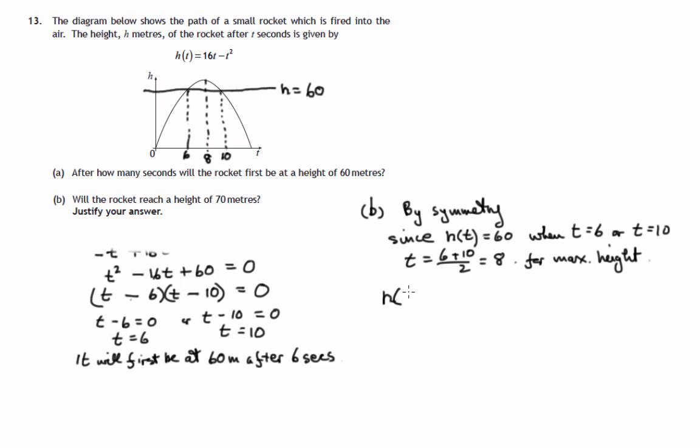So we have a formula for the height and we need to substitute t equals 8 into that formula. So 16 times 8 minus 8 squared, so this is 128 minus 64 which gives us 64 meters.